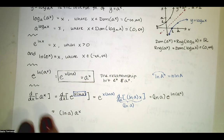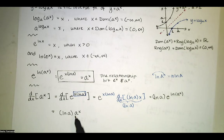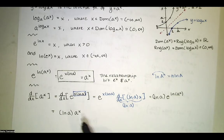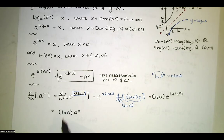If the base happens to be e, the derivative of e to the x is e to the x times natural log of e. And natural log of e is just one, because e to the first power is e. So with base e, the derivative and the function itself are exactly the same.